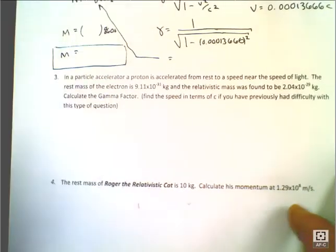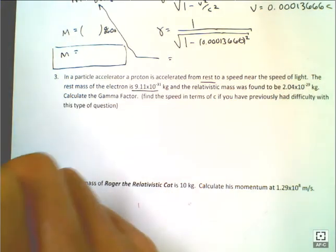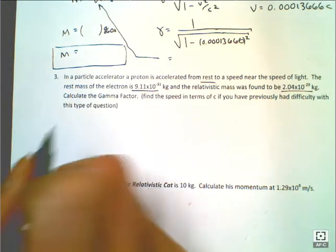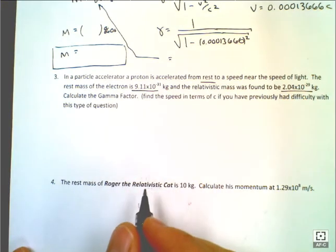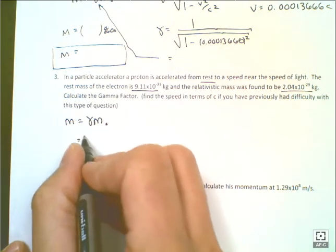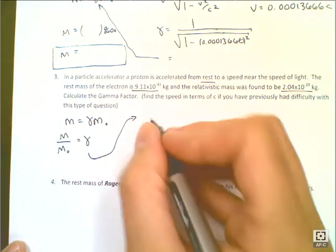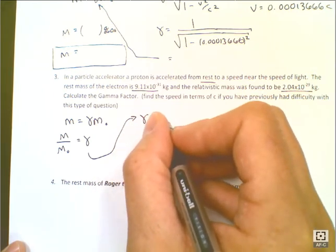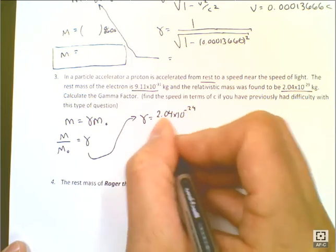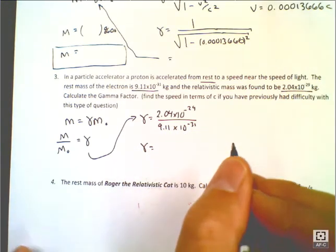Another example here. In a particle accelerator, a proton is accelerated from rest to near the speed of light. The rest mass of the proton is this. The relativistic mass was found to be this, so it is quite a bit larger. Calculate the gamma factor. We know this. To find the gamma, just simply take the relativistic mass divided by the rest mass. So our gamma is going to be the relativistic mass, which is 2.04 times 10 to the negative 29 divided by 9.11 times 10 to the negative 31. And you'll get your gamma factor. It's going to be fairly large.